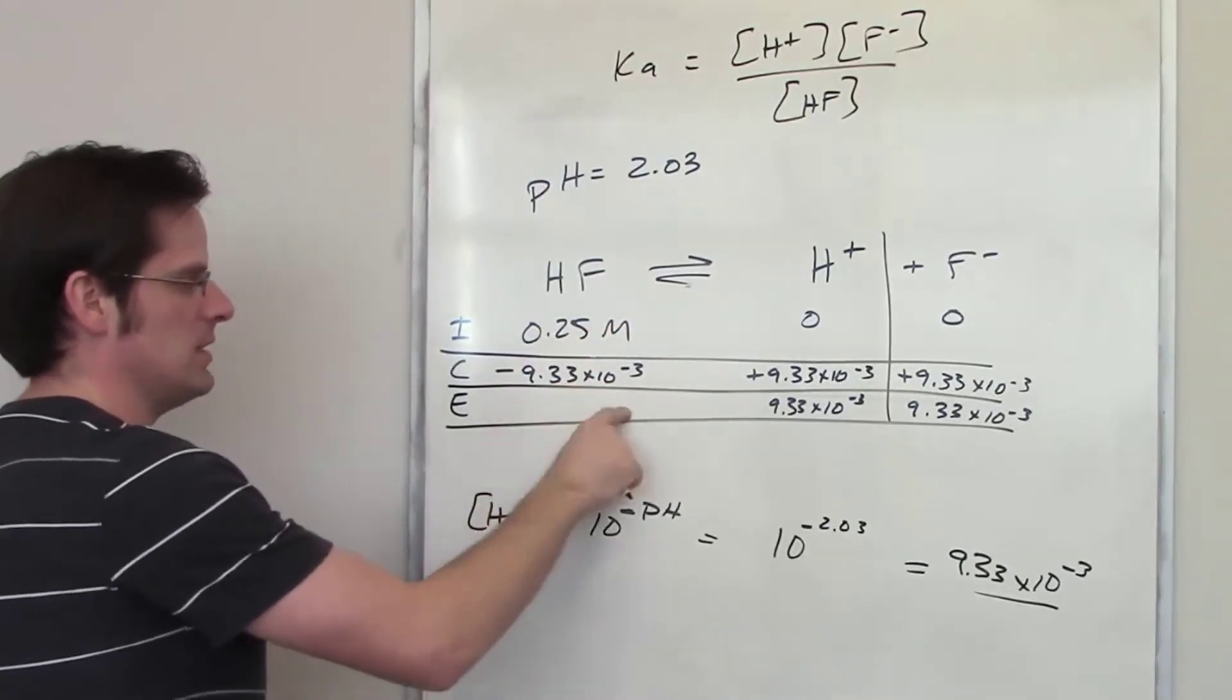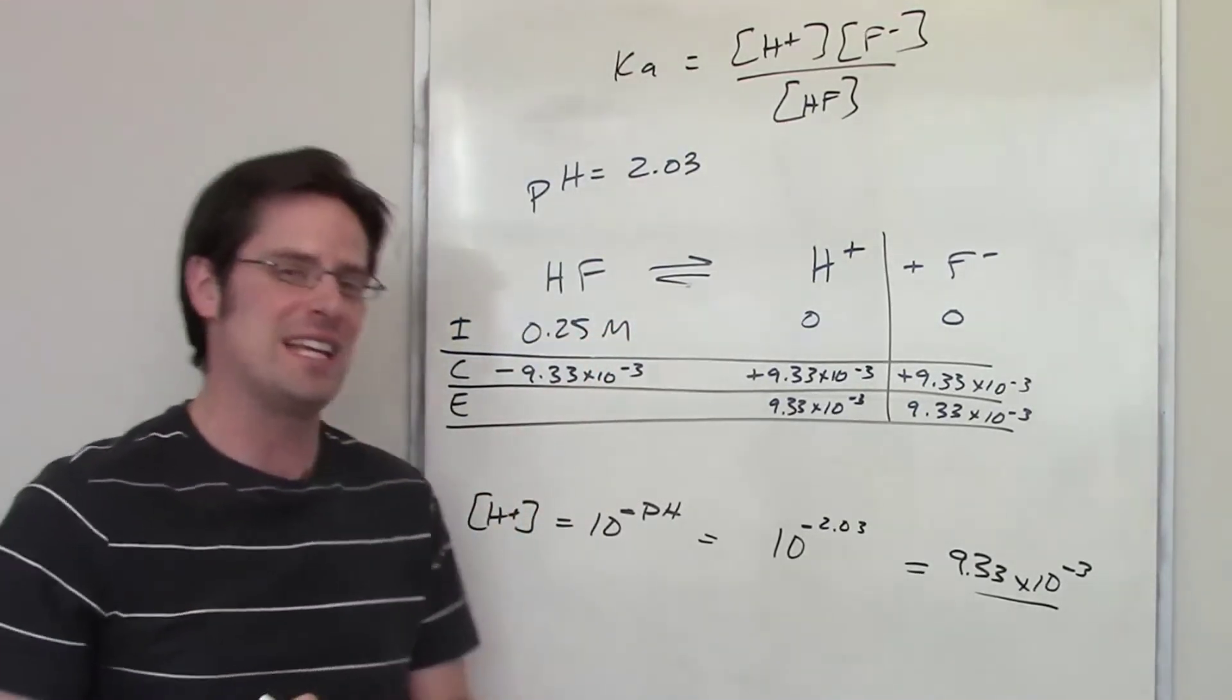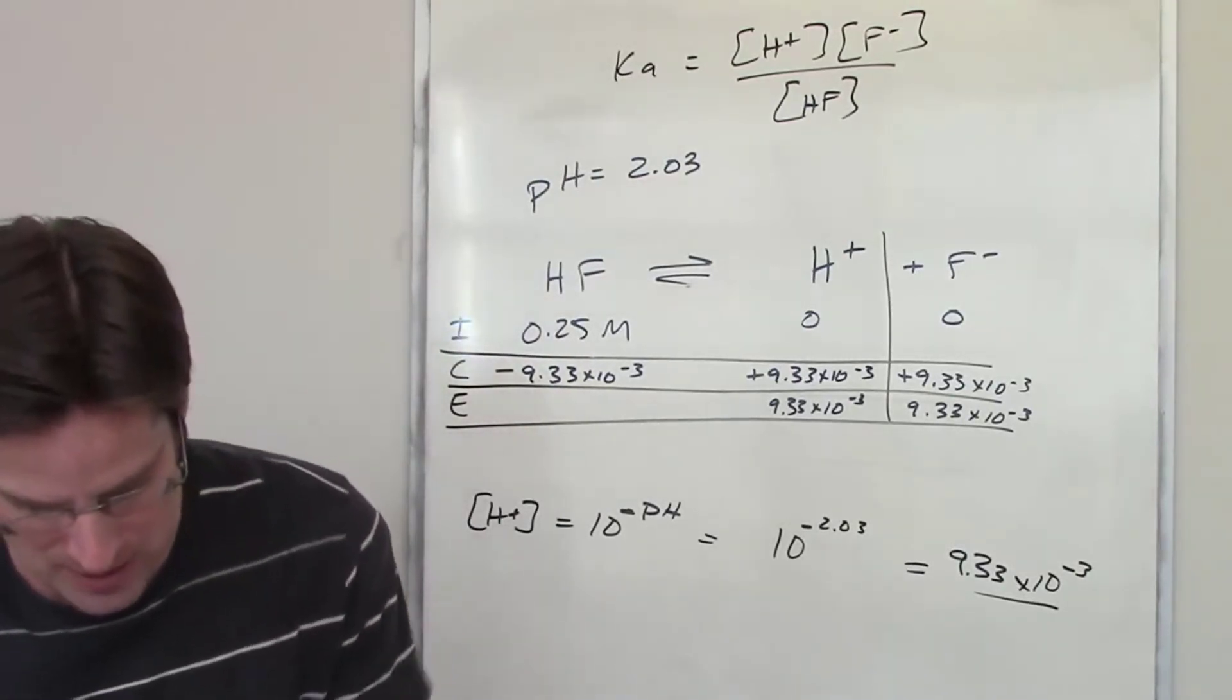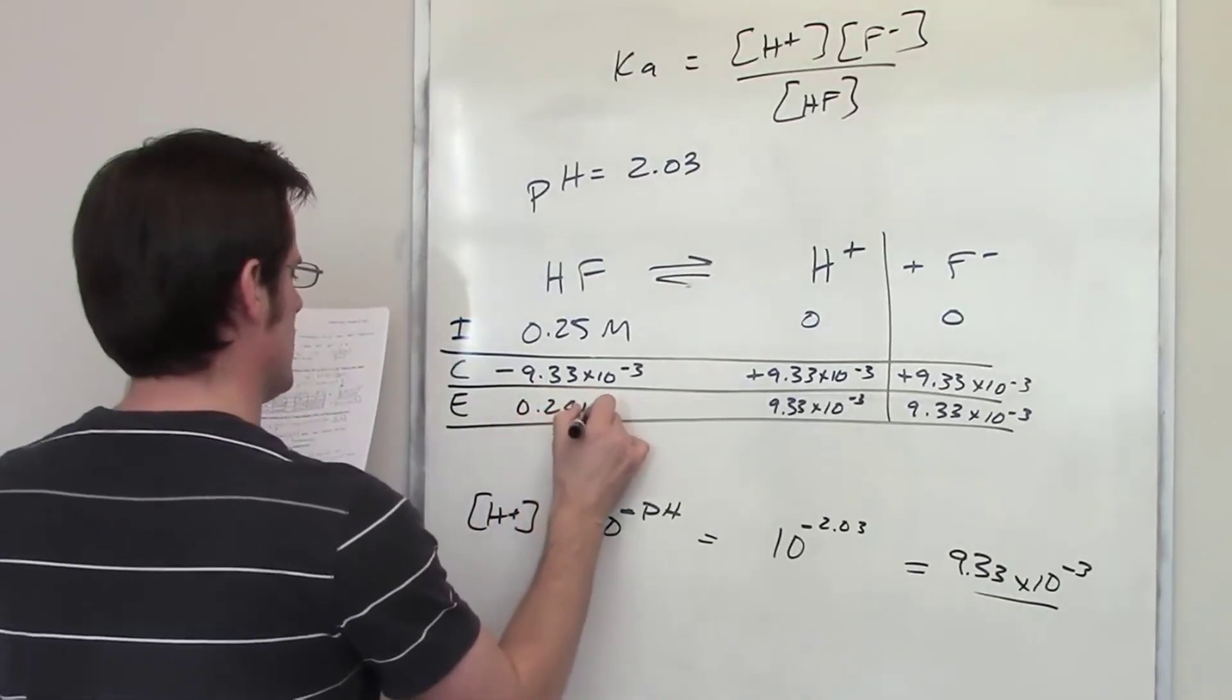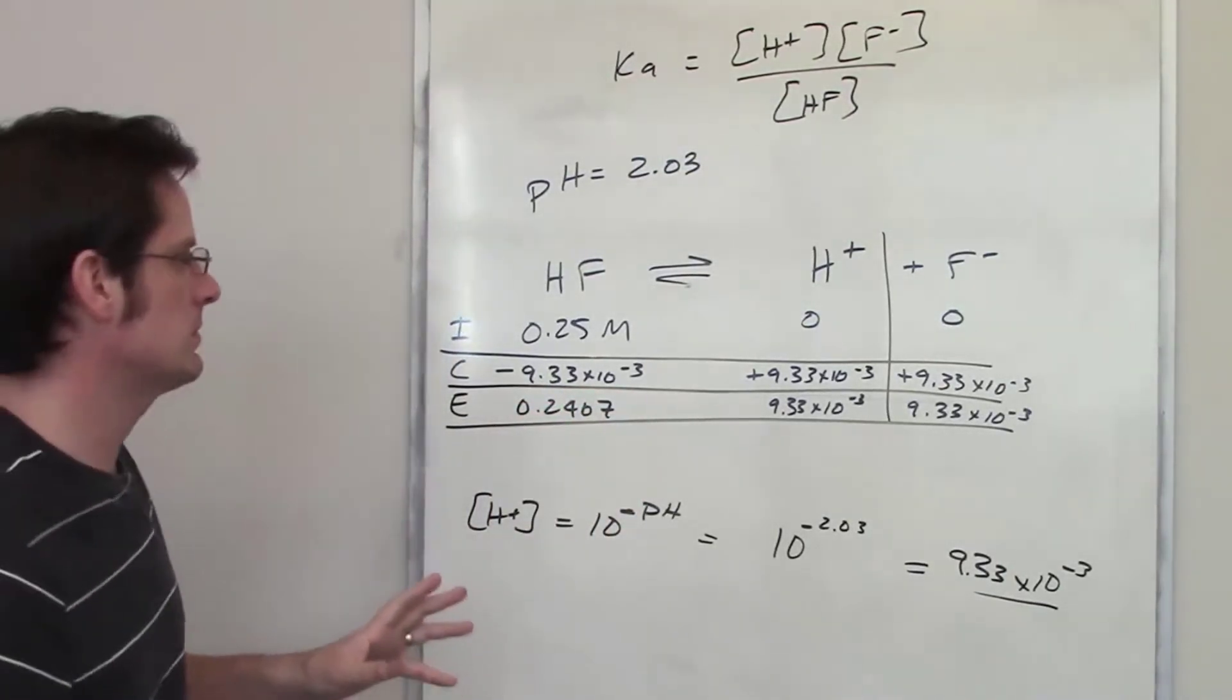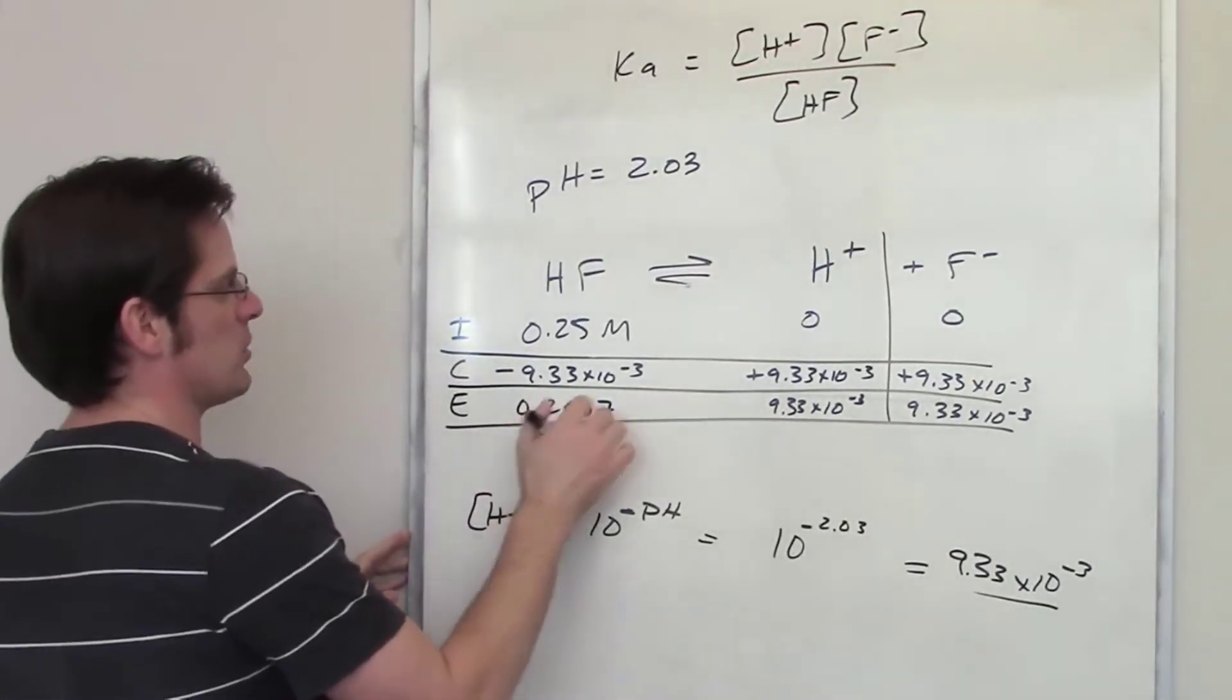And the difference between these two, well, that's going to be the final equilibrium concentration of HF. Now, I happen to have done that earlier, and that number ends up coming out to be 0.2407. So, now, I have the equilibrium concentration of HF.